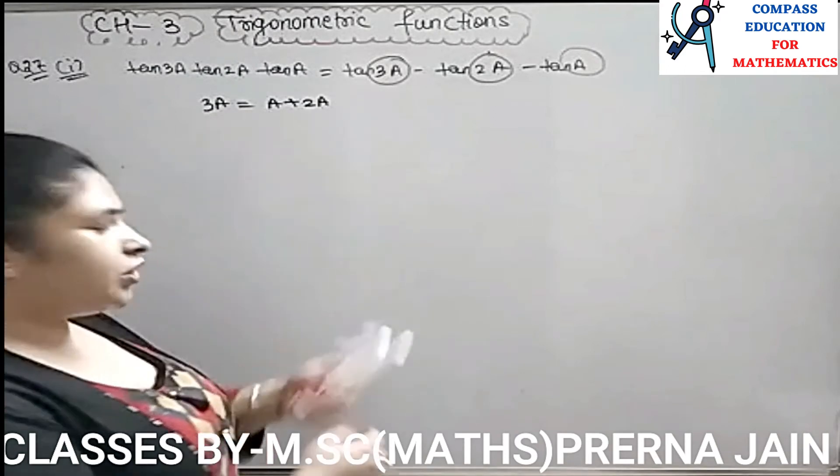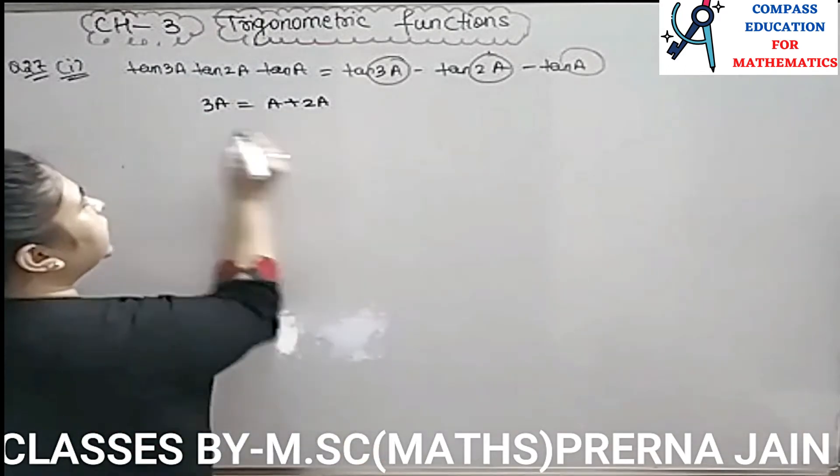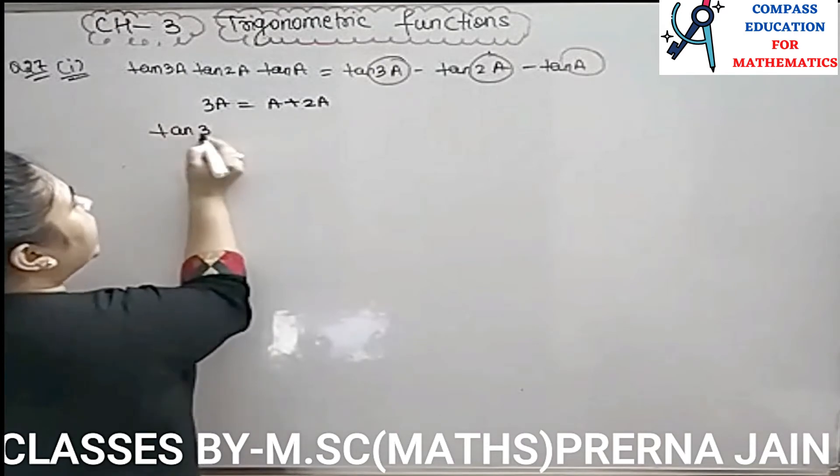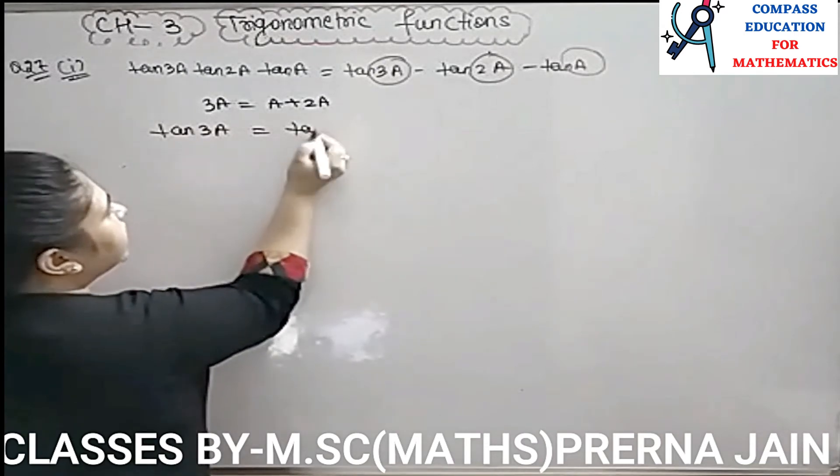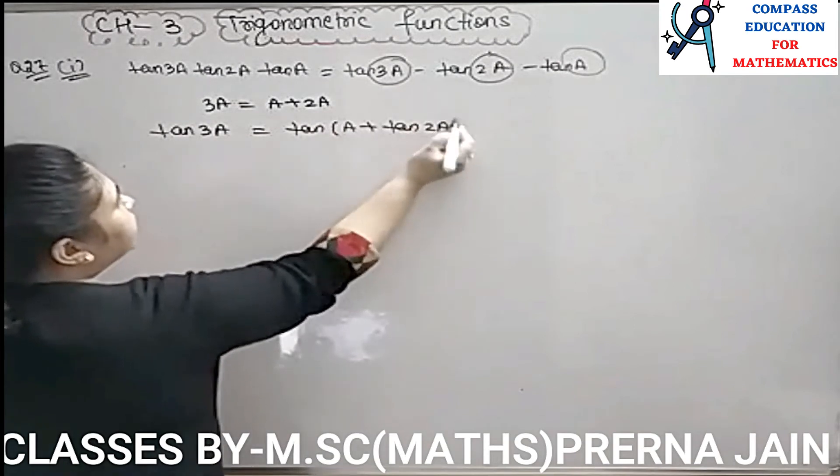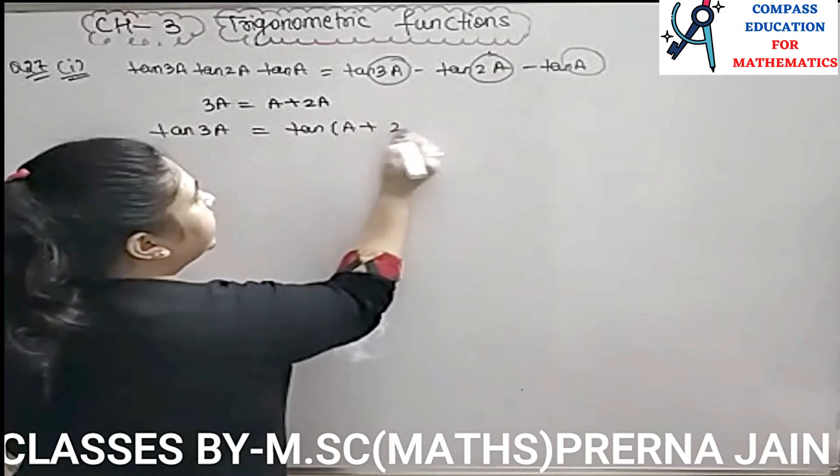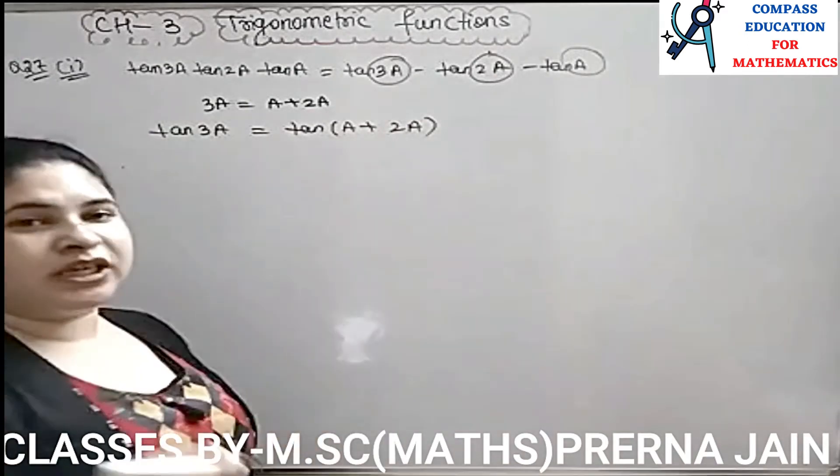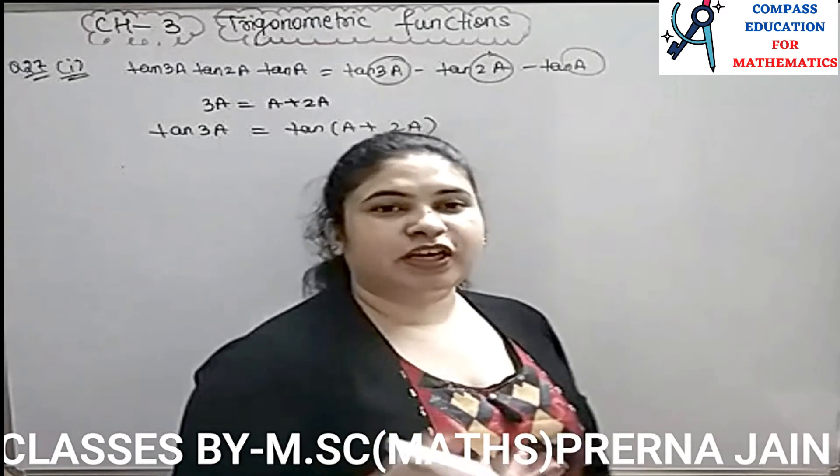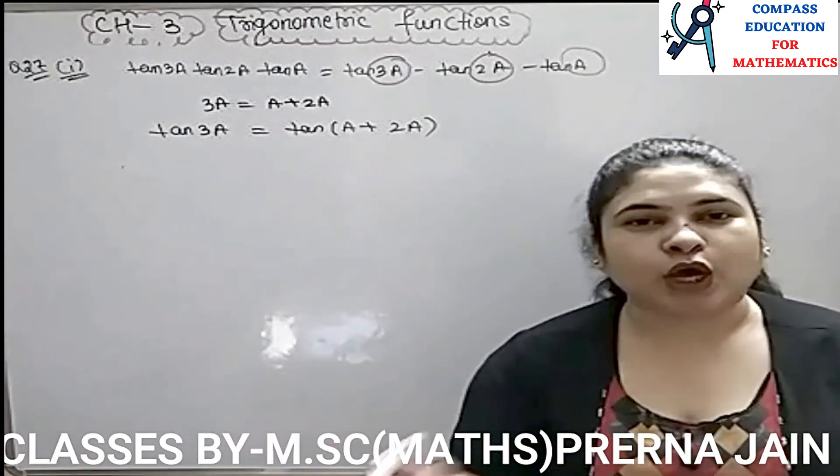First, I wrote that 3A is equal to A plus 2A. If there is a whole question in terms of TAN, that's why I am taking TAN on both sides. What did I do? I had a whole question in terms of TAN. What did I take on both sides? TAN. Now, there is a whole question in terms of COT, baby, so you are taking COT on both sides. Why did we take TAN on both sides? We have a COT.